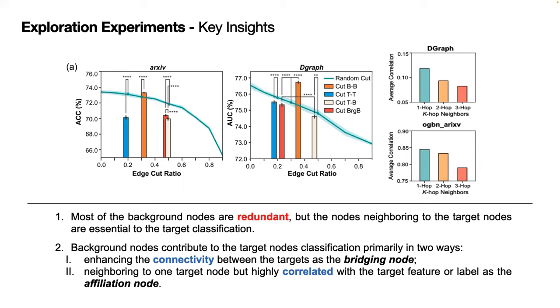To answer these questions, we conduct empirical analysis. The results show that most of the background nodes are redundant, but nodes neighboring to the target nodes are important to the target node classification. And the background nodes contribute to the target node classification primarily in two ways.